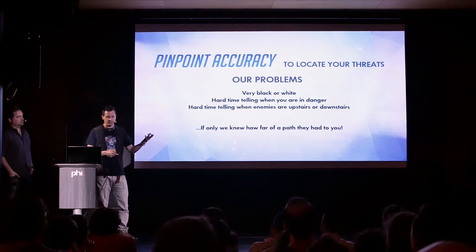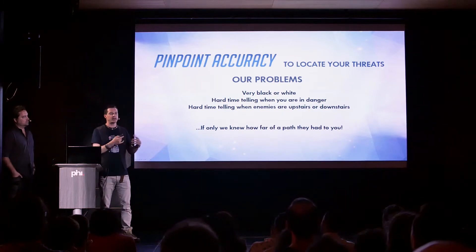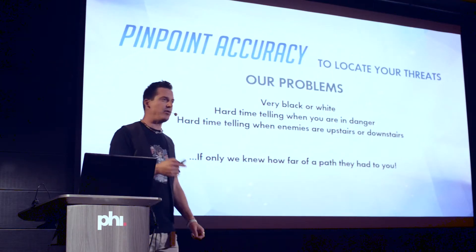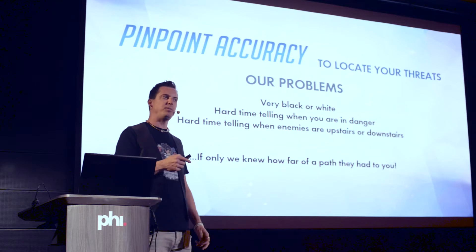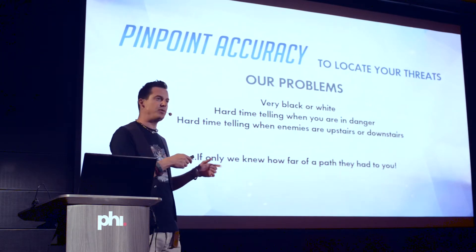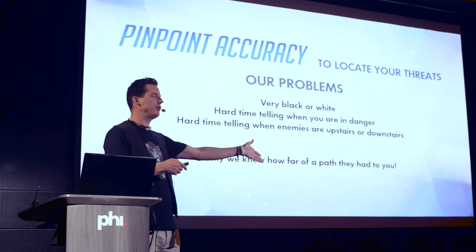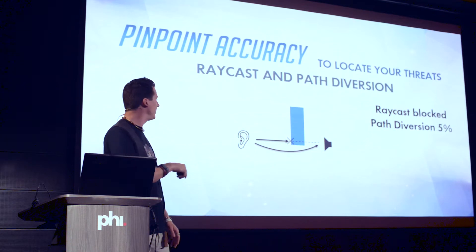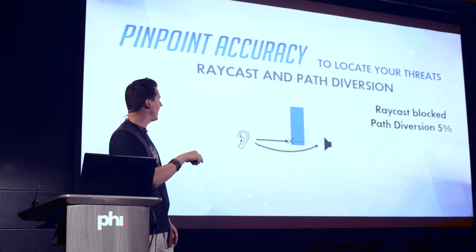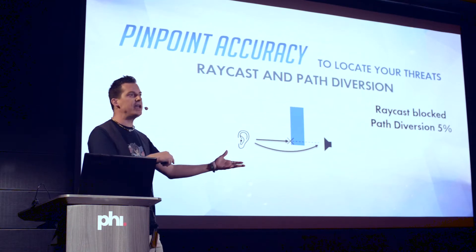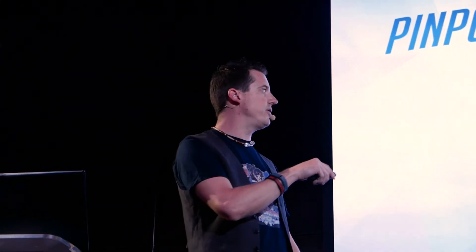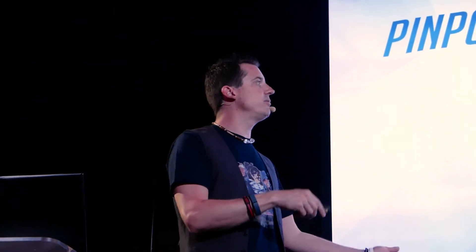At some point, our lead engine programmers were showing technology that we were using for Overwatch for flight path data. And somehow, everyone in the sound department said: that would be so cool if, instead of shooting rays, we knew about the path that we would take to a sound. So that's kind of what we did. In this top-down example, we are the listener, there's the sound, we do a raycast, and then we ask this AI data for how long is the path. There might be a path diversion of a few percentage — so if this is a 20-meter raycast and it's a few meters longer, we get a value out of that.